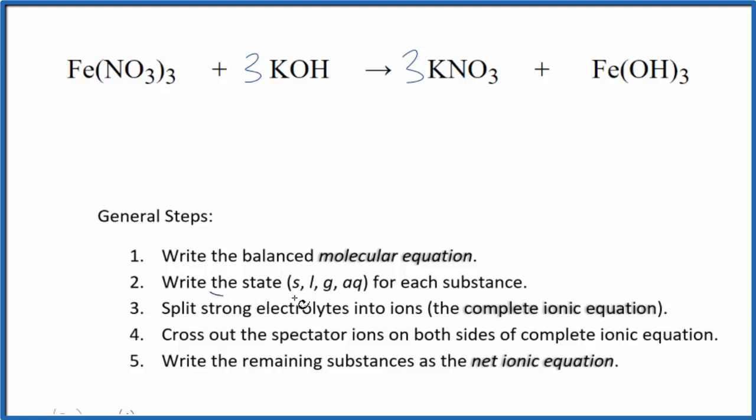Now we can write the state for each substance. So if you know your solubility rules, nitrates are very soluble. AQ for aqueous. Potassium hydroxide, that's a strong base. That's going to be aqueous. It'll dissolve and dissociate into its ions.